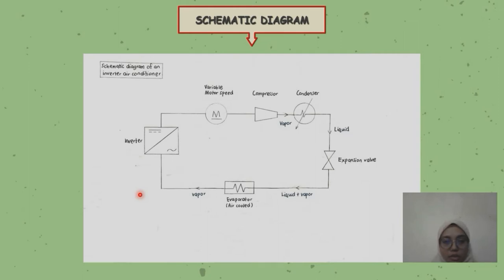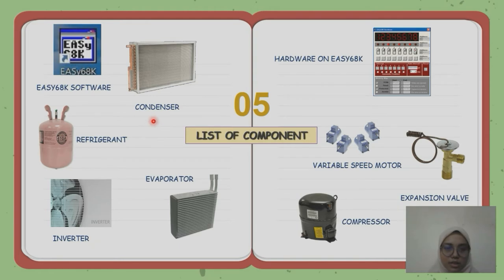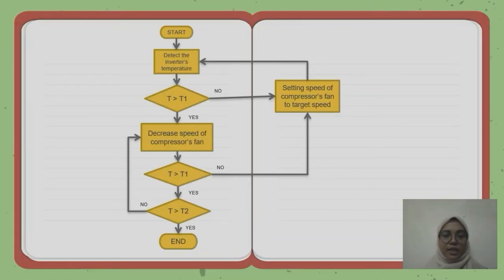This is the list of components we use in the PBL project: the Easy68K software, refrigerant, inverter, condenser, evaporator, and compressor. Next, I will explain the flowchart. The flowchart starts with the sensor detecting the inverter temperature. If T is larger than T1, the compressor fan speed will be decreased; if T is smaller than T1, the speed of the compressor fan will be set to the target speed.